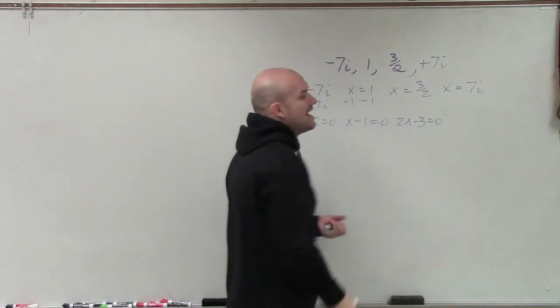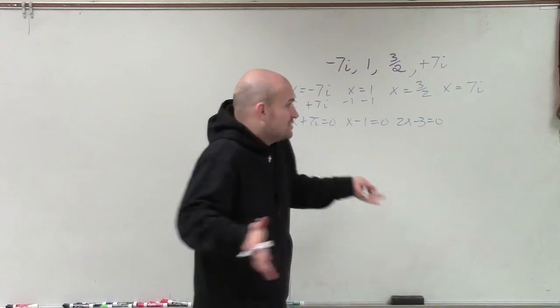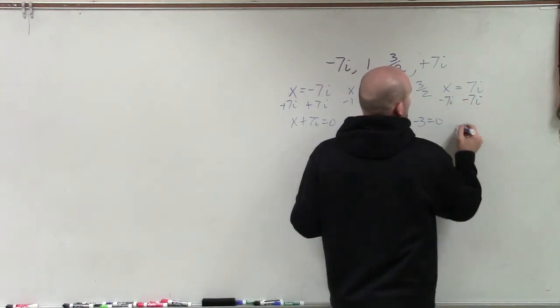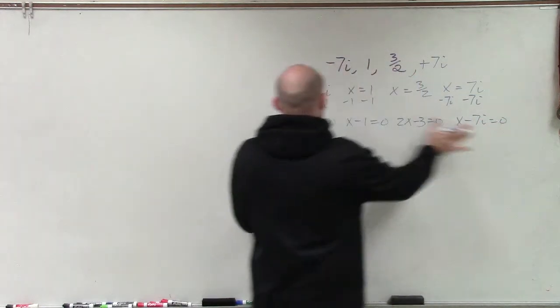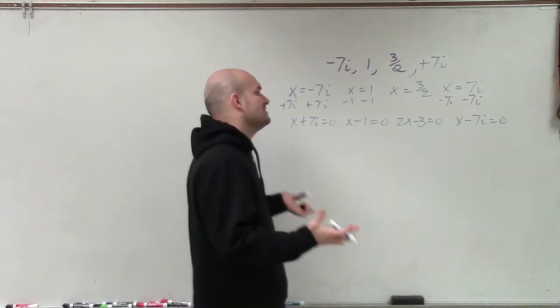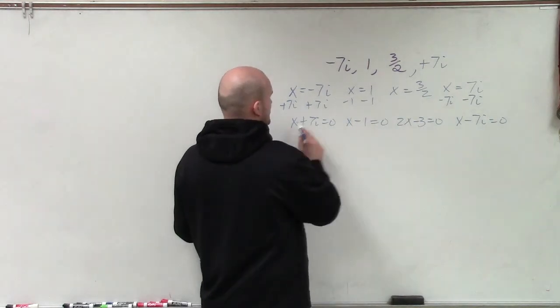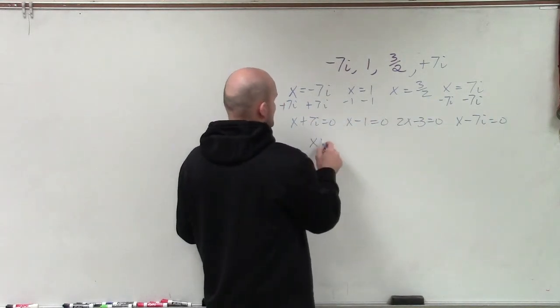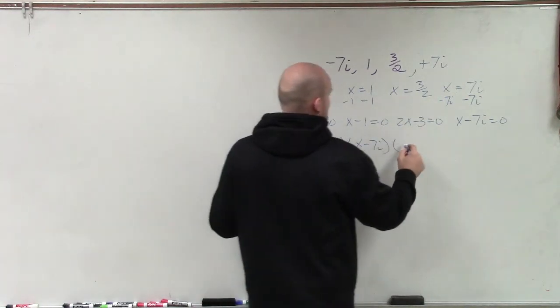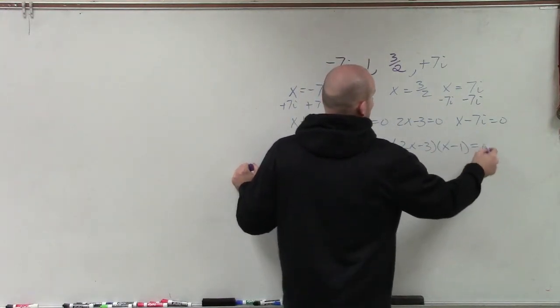Because again, if you just subtract the 3 halves, then you're going to have a factor with a fraction in it. And we want to find a polynomial that does not have a fraction as its coefficients. And here, subtract 7i, subtract 7i. So x minus 7i equals zero. Now, obviously, I'm going to want to rewrite these together. But now, by reversing my zero product property, I can write these as the product of their factors. So therefore, I'm going to put, again, the x plus 7i and x minus 7i together. So x plus 7i times x minus 7i times 2x minus 3 times x minus 1 equals zero.